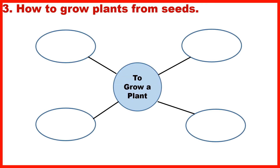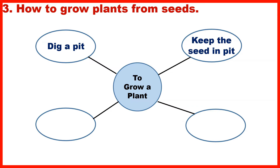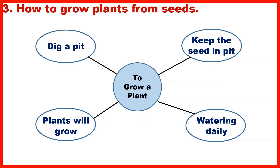Section 3: Mind Map – How to grow plants from seeds: Dig a pit, keep the seed in the pit, water daily, and plants will grow.